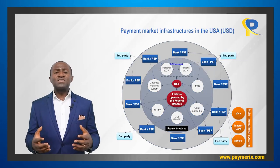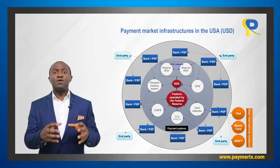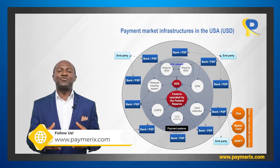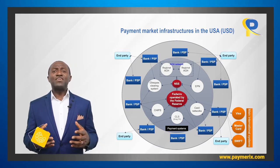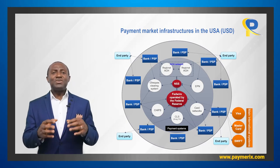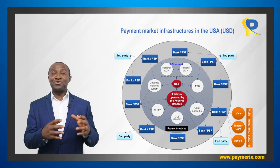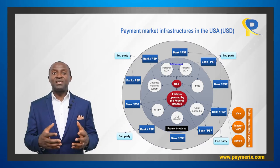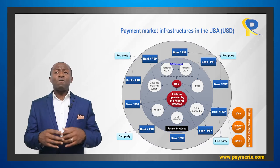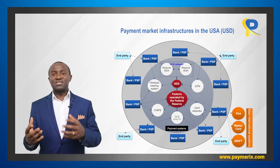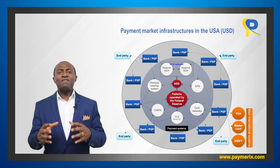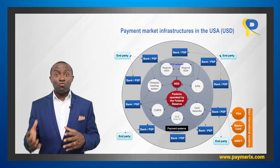Now let's consider core non-cash payment systems in one country to illustrate this. We will look at the payment market infrastructures for the US dollar — the payment systems of the United States. The overall structure looks like the generic model we considered before. In the middle, we see Fedwire, the system operated by the central bank in the USA, called the Federal Reserve Bank or simply the Fed. Around Fedwire, we see interbank clearing systems — called ancillary systems — while Fedwire is called the central system. All interbank systems must use Fedwire to settle their transactions. There are two high-value payment systems in the United States: Fedwire, the RTGS system, and CHIPS.